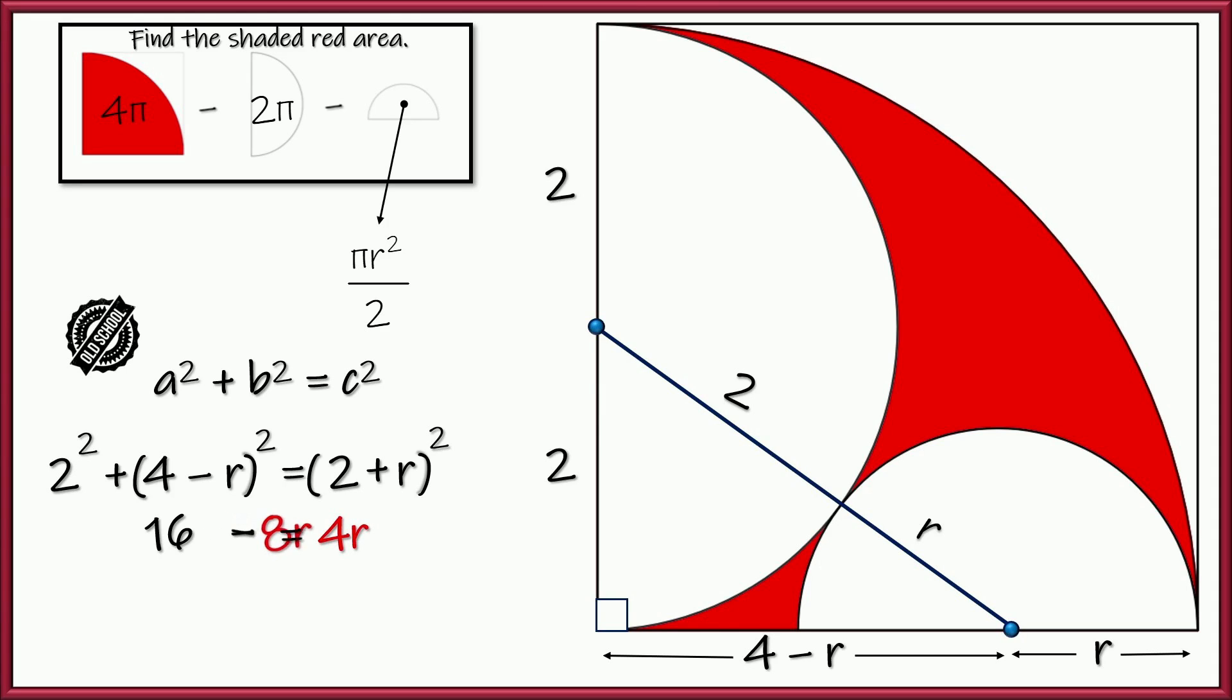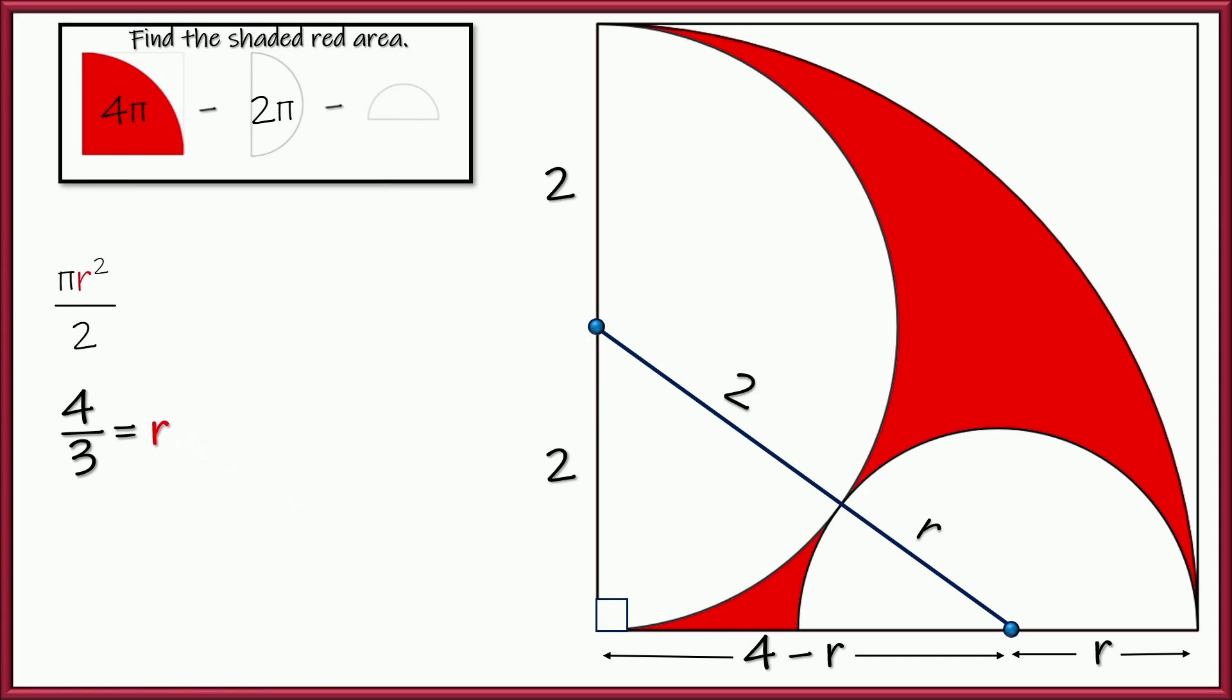And let's go ahead and move the 8r to the other side, adding it. And 8 plus 4 is, of course, 12. So 16 equals 12r. One last thing left to do to solve for r, we're also going to have to reduce. But we're just going to divide both sides by 12 and reduce that by 4, right? 4 goes into 16, 4 times it goes into 12, 3 times. So I know that the smaller radius is 4 thirds.